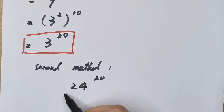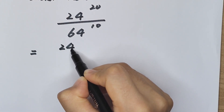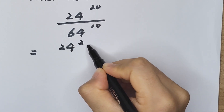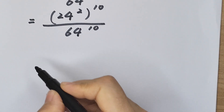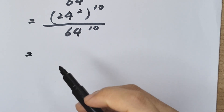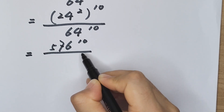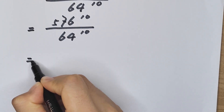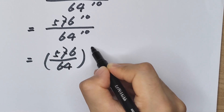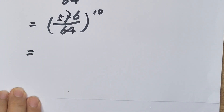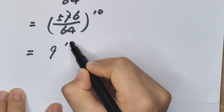Method 2: 24 to the power of 20 divided by 64 to the power of 10. We rewrite 24 to the power of 20 as 24 squared, all to the power of 10. 24 squared equals 5776, so this becomes 5776 divided by 64, to the power of 10.